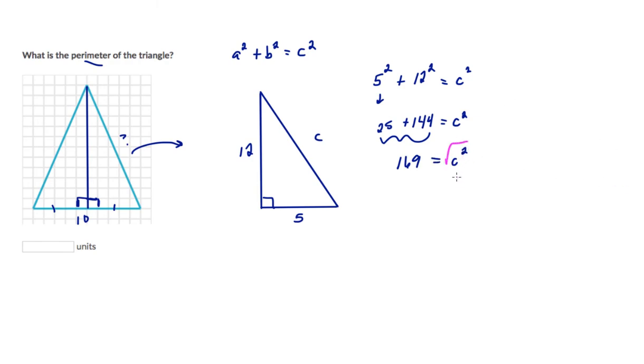And then if you take the square root of this to isolate c, you get c. And then you take the square root of this, you get 13.